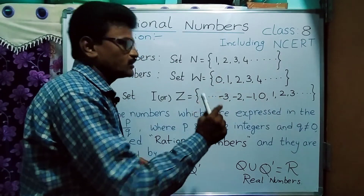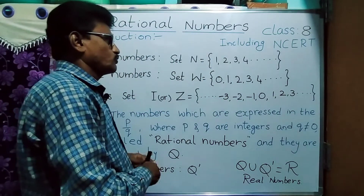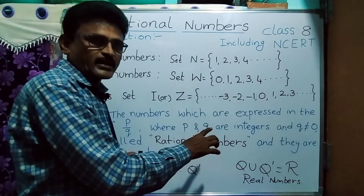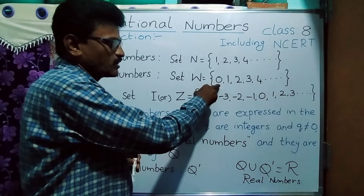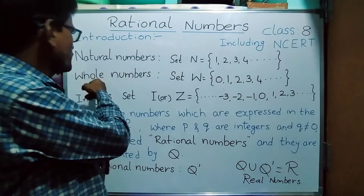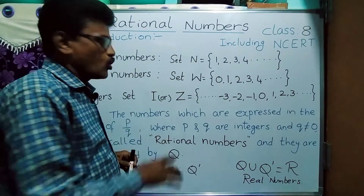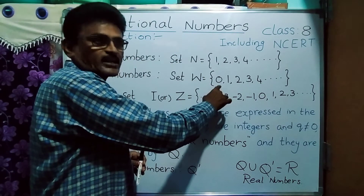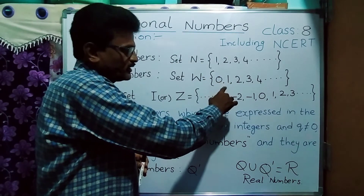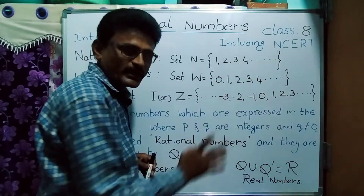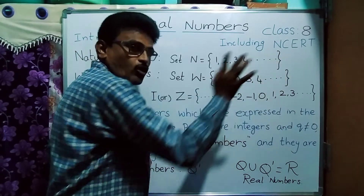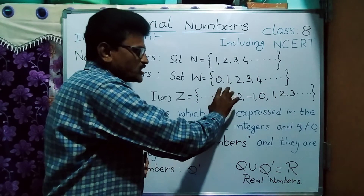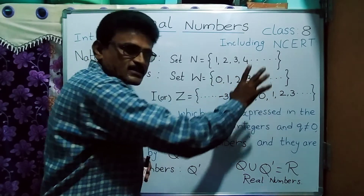If you include one extra digit, that is 0, then we get the whole number set. For the natural number set, if we join the extra number 0, that set is said to be the whole number set. The whole number set is denoted by capital W. Numbers start from 0, then the same natural numbers: 0, 1, 2, 3, 4, 5, and so on. There is no ending number, but the beginning number is 0, and the difference between any two successive numbers is still one.